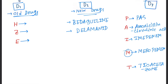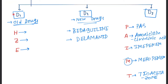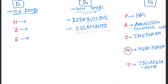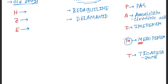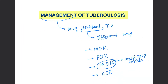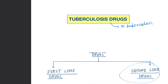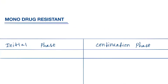In Group D, D1 contains old drugs H, R, Z, E. D2 contains new drugs bedaquiline and delamanid. D3 contains PAS, amoxicillin-clavulanic acid, imipenem, meropenem, and thiacetazone.